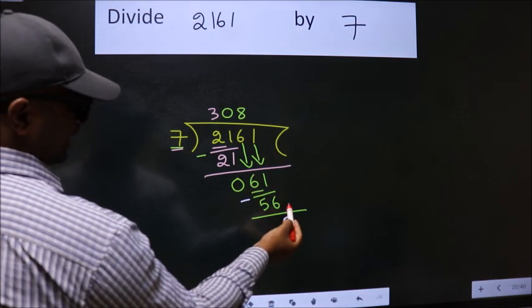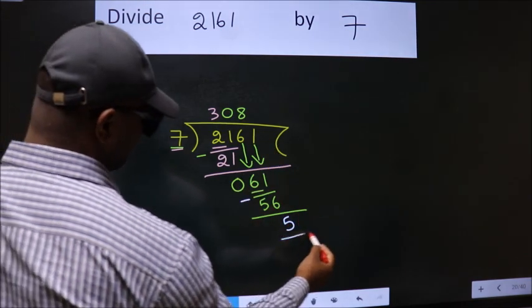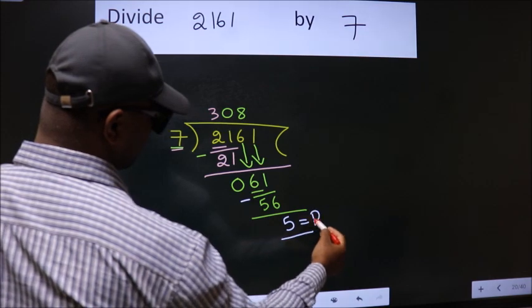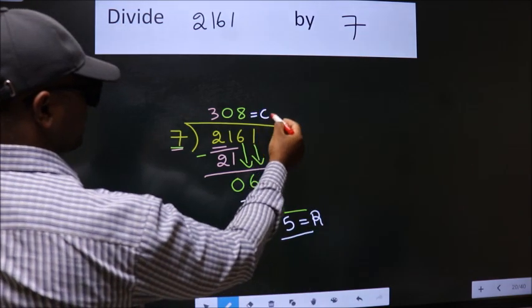No more numbers to bring it down. So we stop here. This is our remainder. This is our quotient.